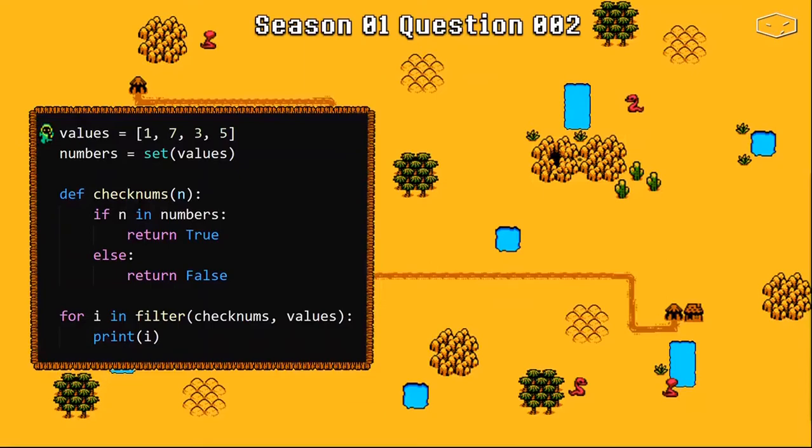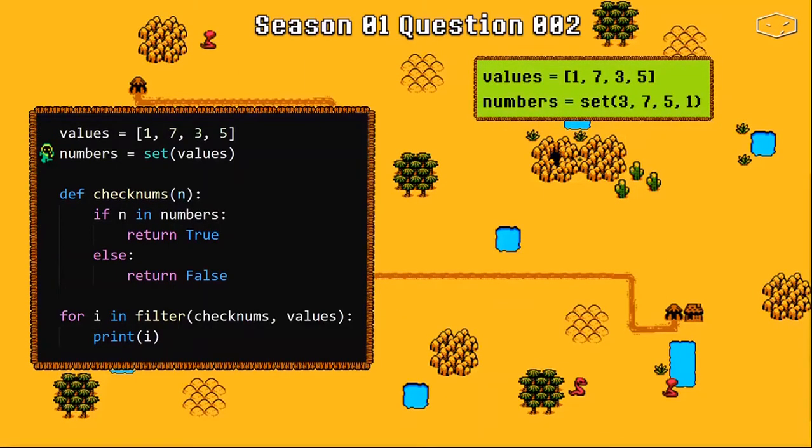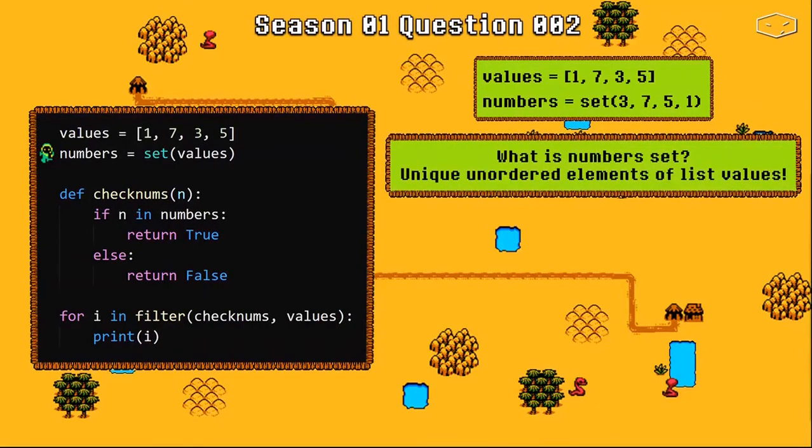First Python loads the values list and the number set. So far so good, right? No! We must understand what is number set. Number set is actually the unique unordered elements of values list. So what we know is the number set have the same elements of values list but we don't know the order.